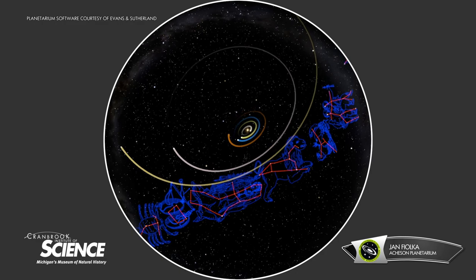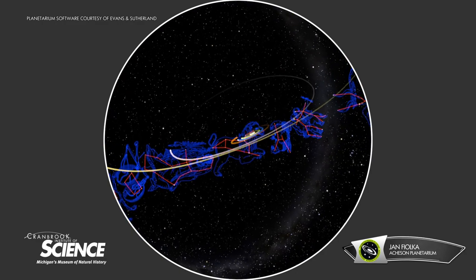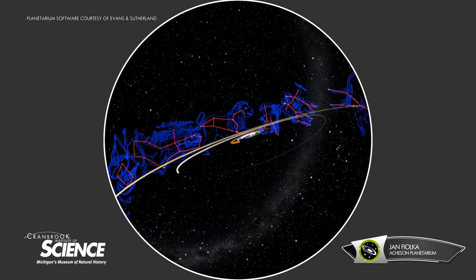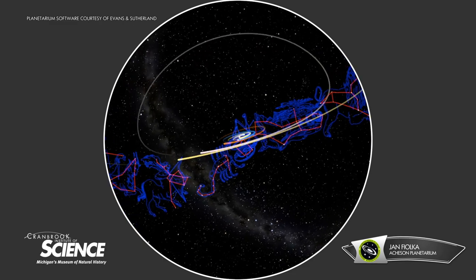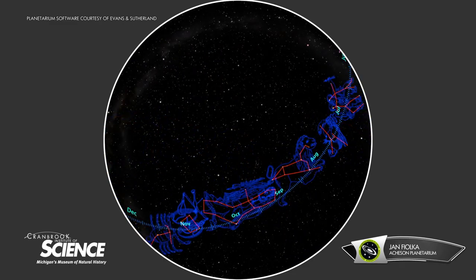Nowadays, we know it's nothing to do with magic. It's really the flatness of the solar system that's the cause. We call this apparent path the ecliptic.